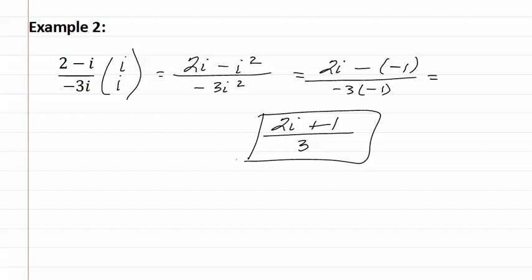As you can see, rationalizing a denominator with i is very simple. If it is a monomial, you simply multiply it by i.